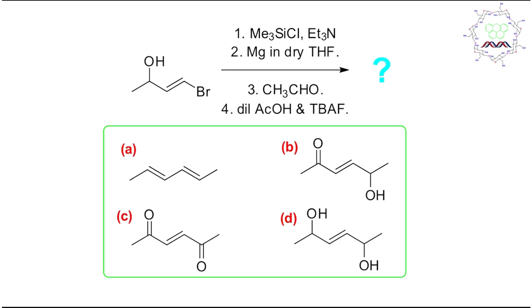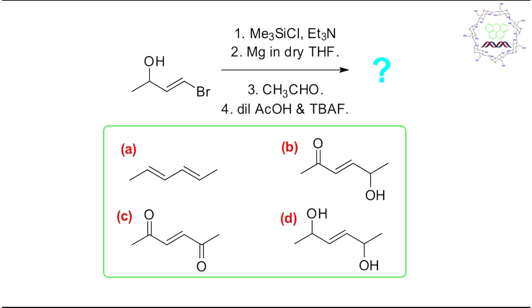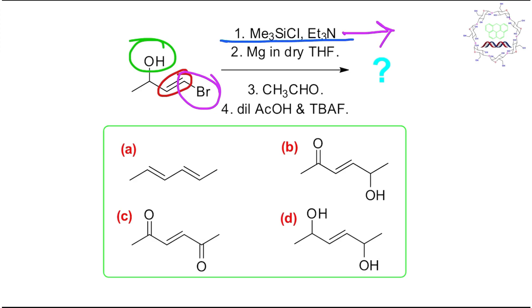This molecule is pretty simple. It has three main functional groups: one is a hydroxyl or alkyl alcohol, one is a double bond, and another is a vinyl carbon-bromine bond. I suggest you look at the first step reagent first, as it's helpful to understand. This reagent is trimethylsilyl chloride and triethylamine — this is silylation, or silyl ether preparation of an alcohol.